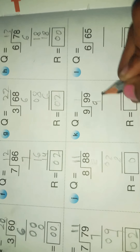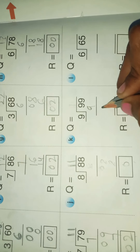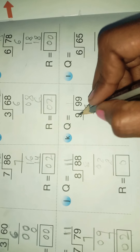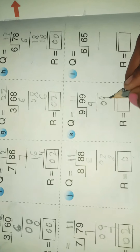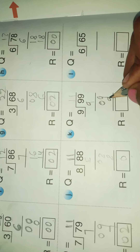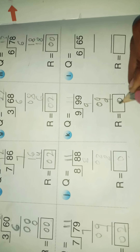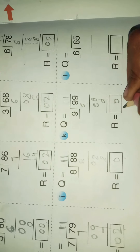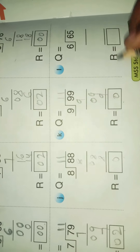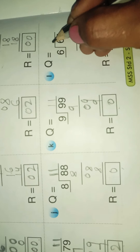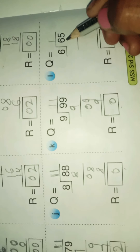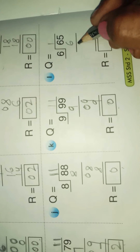Next: 9 ones are 9, 9 minus 9 is 0. Bring down 9 below. 9 ones are 9, 9 minus 9 is 0. The quotient is 11 and the remainder is 0. Next: 6 ones are 6, it becomes 0.